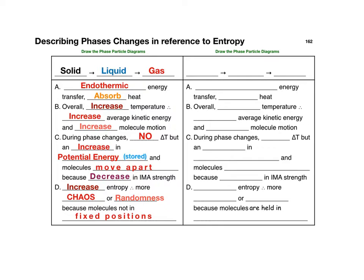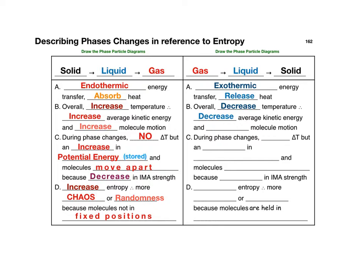In science, we have to look at the reverse process also. So on the right-hand column, we will compare starting off as a gas, changing into a liquid, and then finally ending as a solid. Phase changes in this direction — gas to liquid, liquid to solid — require an exothermic energy transfer, meaning there is a release of heat. Overall, from the gas phase back to the solid phase, there is a decrease in the temperature, meaning that there is a decrease in the average kinetic energy.